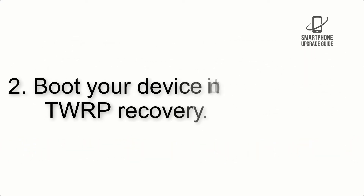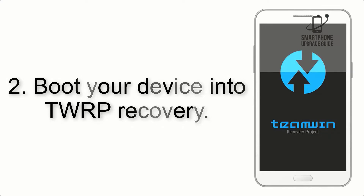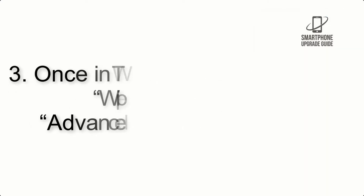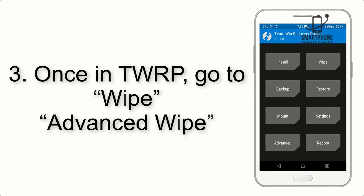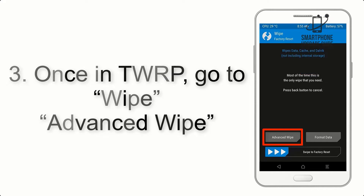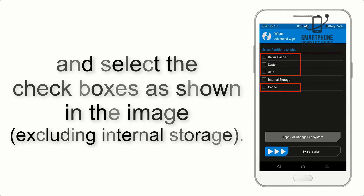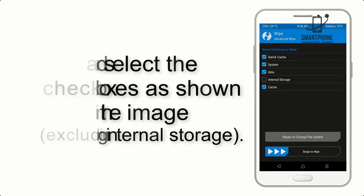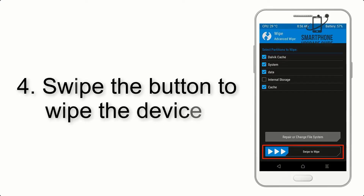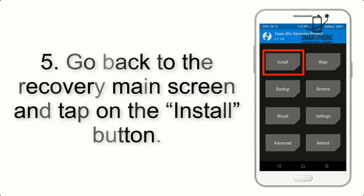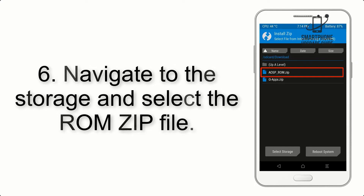Step 3: Boot your device into TWRP recovery. Once in TWRP, click on Wipe, then Advanced Wipe, and select the checkboxes as shown in the image, excluding internal storage. Step 4: Swipe the button to wipe the device.